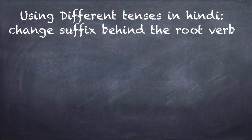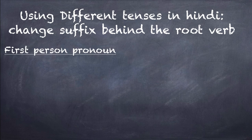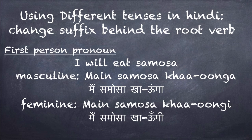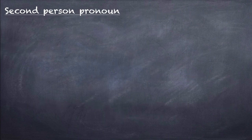Let's start with the first person pronoun. I'll take the example 'I will eat samosa.' For the masculine gender, you take the first person pronoun 'mai,' then your noun, and then the root verb gets the 'unga' sound at the end. For the feminine gender, the root verb takes the sound 'ungi' at the end, so it becomes 'mai samosa khaungi.'